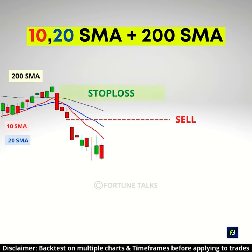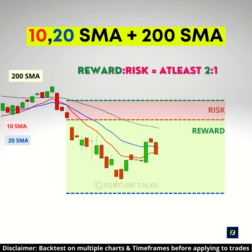Place your stop loss above the high of that bearish reversal candlestick, and set your target with a reward to risk of at least 2 to 1.